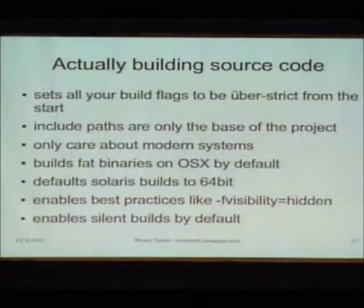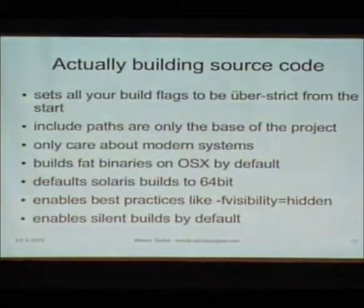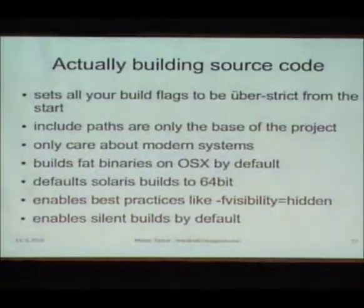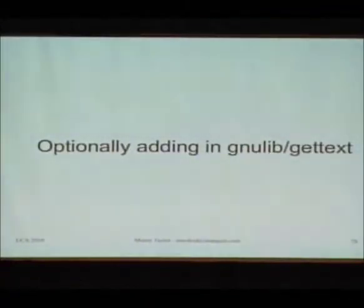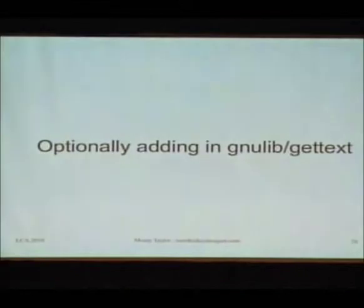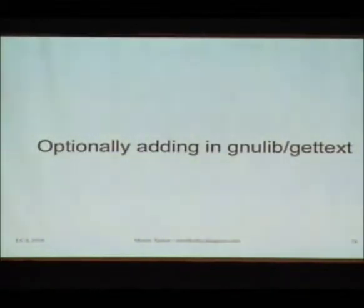AutoMake 1.11 includes the ability to do more silent builds that look similar to how the Linux kernel builds — just 'CC' and then the name of the file, so it's readable. That's turned on by default. It's turn-offable the exact same way it works in the Linux kernel: 'make V=1' or 'make V=0' turns it on or off. You can optionally add in GNUlib and GetText — you still have to do the gettext-size and gnulib-tool things to add those files to your source tree, but build-system-wise you just say you've got GNUlib or GetText and it handles it.